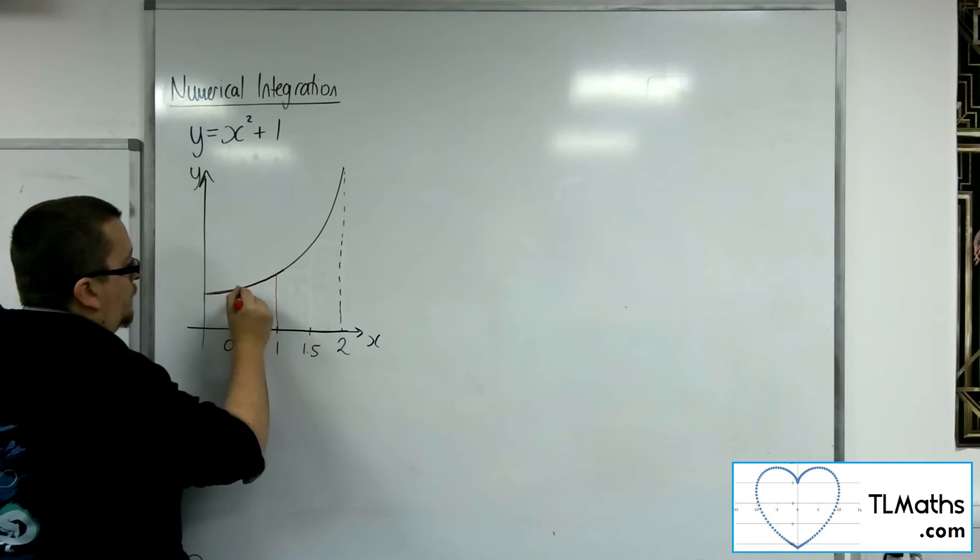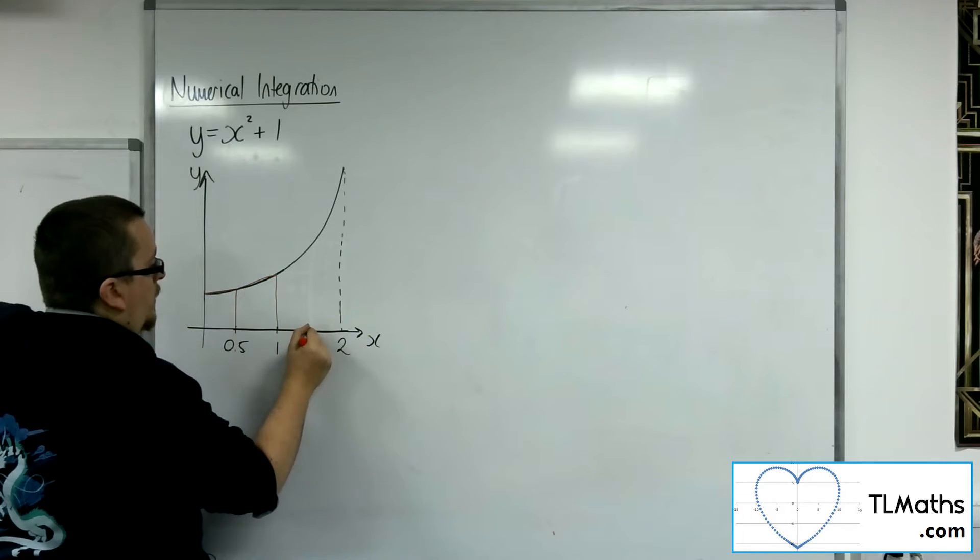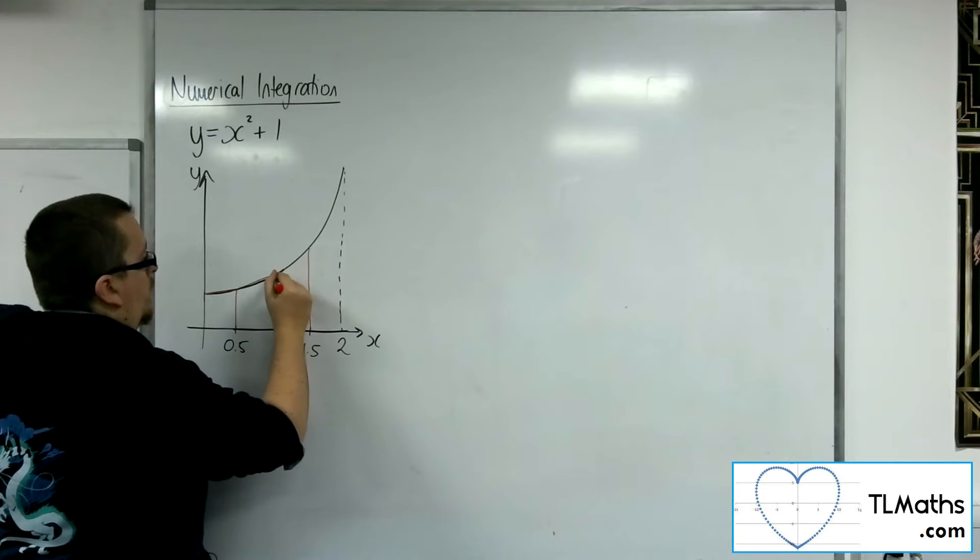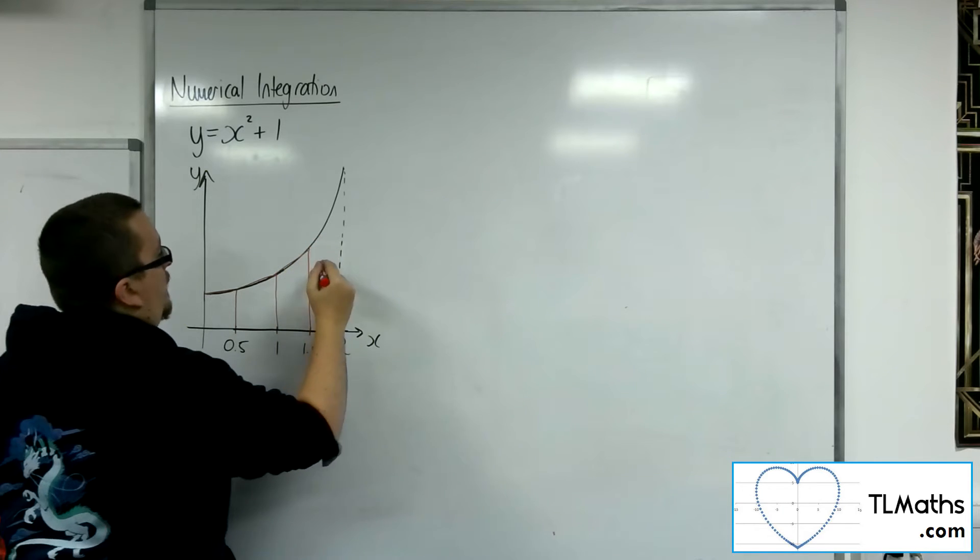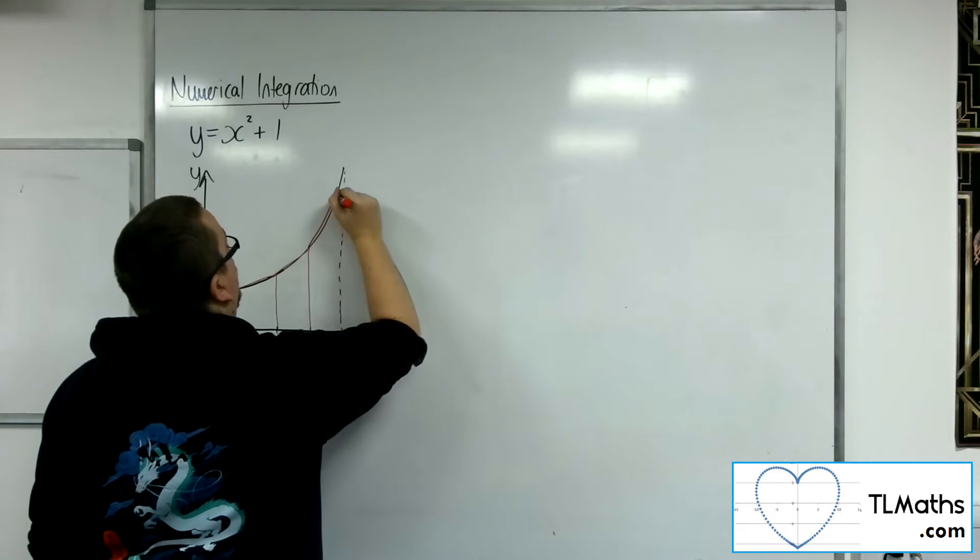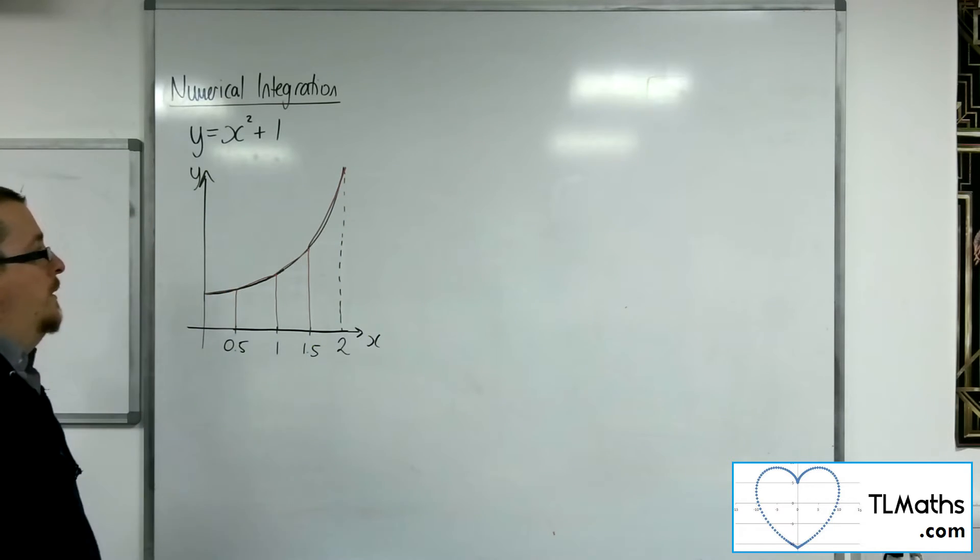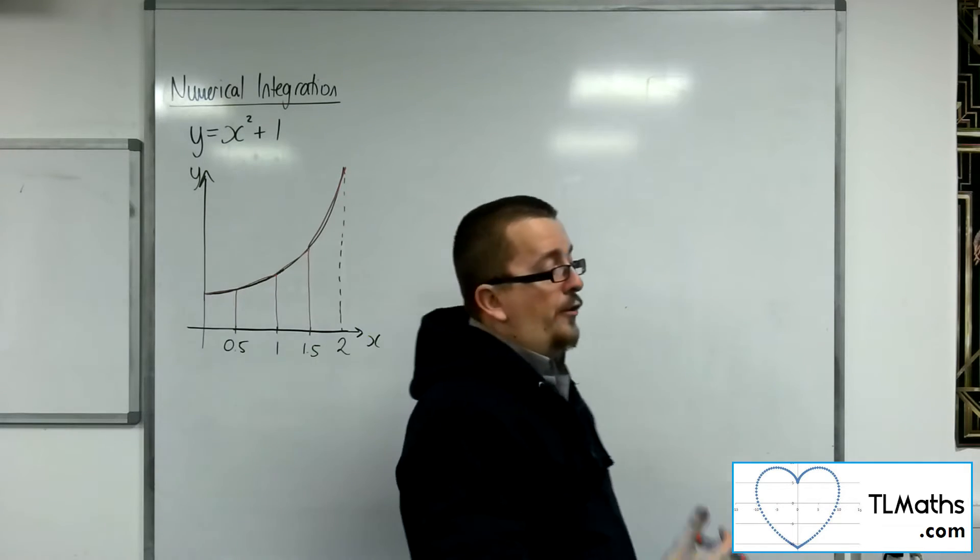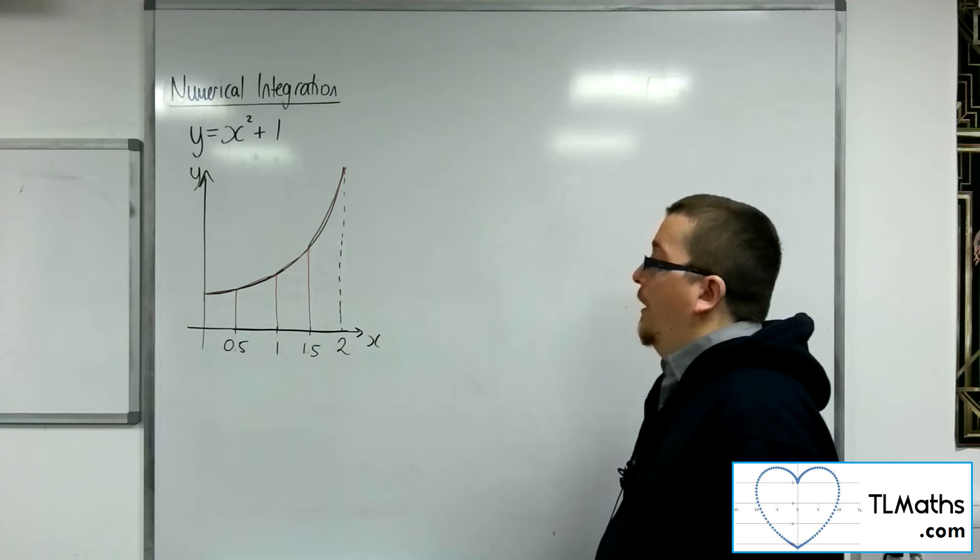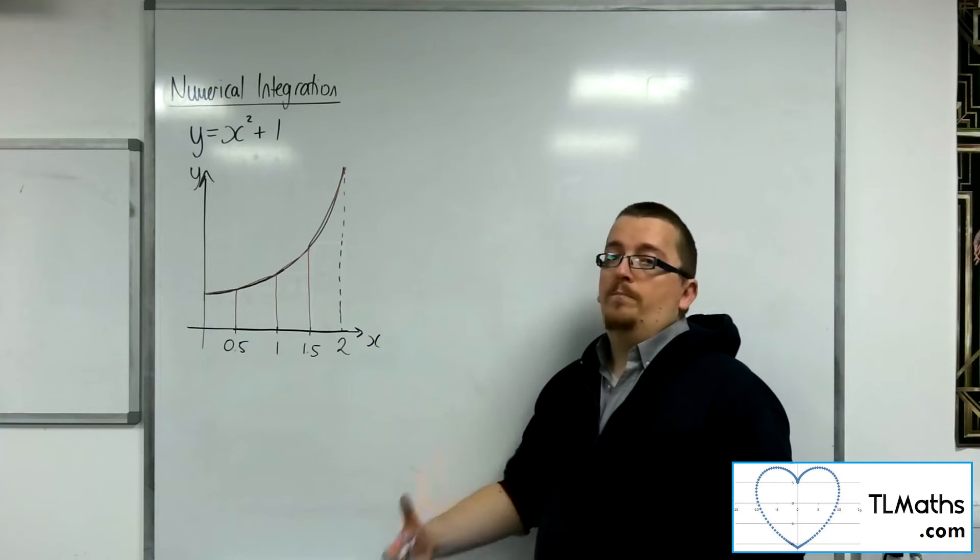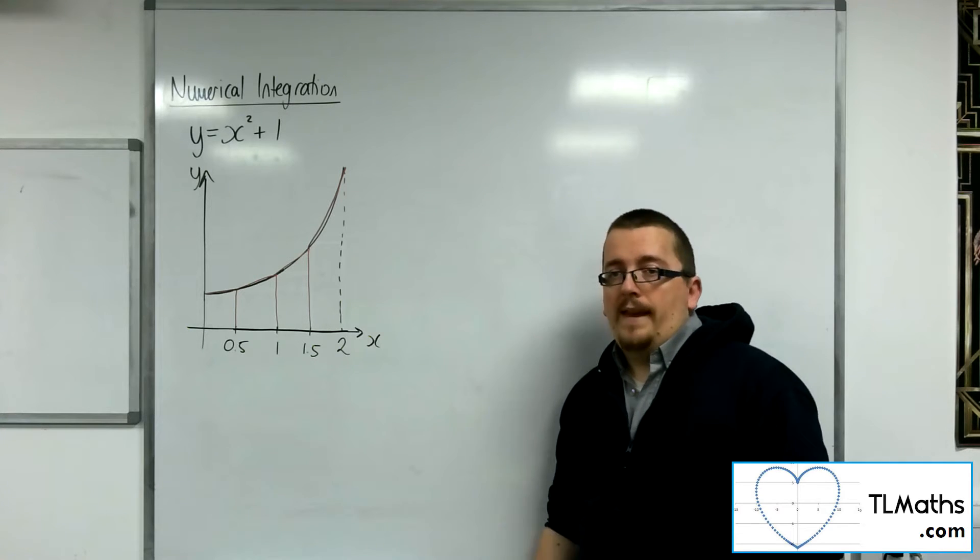So I do the same for 1. I do the same for 1.5. And then I do the same for 2. You can already see that with just 4 strips, I have found a much better estimate for that area.